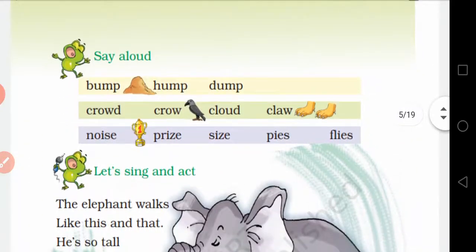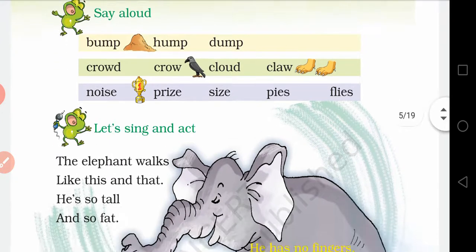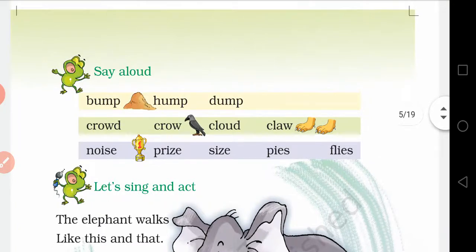Now come to Say Aloud. Say these words loudly: bump, hump, dump, crowd, crow, cloud, claw, noise, prize, size, pies, flies. These are rhyming words - not all words, but you have to find out the rhyming words and tell them loudly, just like bump, hump, dump; prize, size, pies, flies; and crow, claw, cloud.